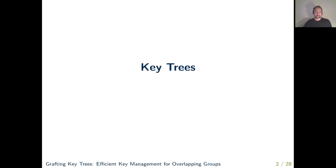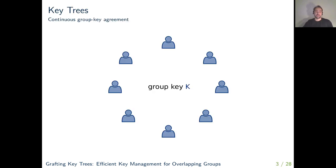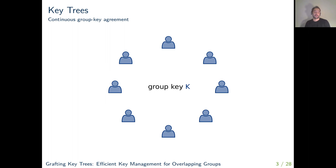I will start with a short introduction into Key Trees — concretely one of their main applications, Continuous Group Key Agreement. In the setting of Continuous Group Key Agreement, a group of users wants to establish a shared key that is supposed to secure the communication within the group. We assume this group to be long-lived, so users want to be able to regularly rotate the key material known to them. On one hand this is to achieve forward secrecy, but on the other hand users might get corrupted and their keys might leak, so updating those keys should re-establish security of the communication.